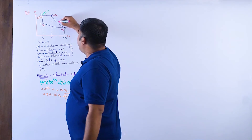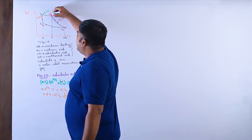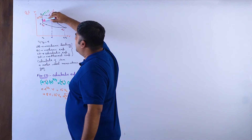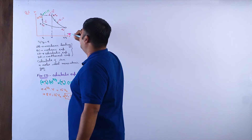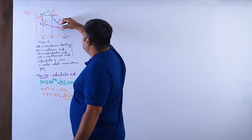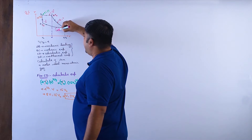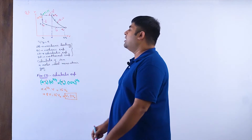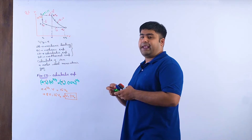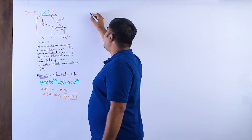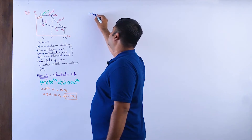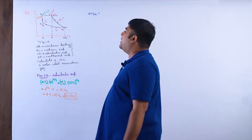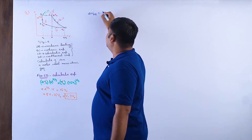The adiabatic step C to D has Q = 0. The isobaric expansion B to C has Q positive. The isochoric heating A to B also has Q positive. The isothermal compression D to A has Q negative. Now W_AB = 0 because it is isochoric.